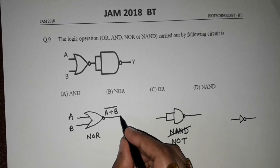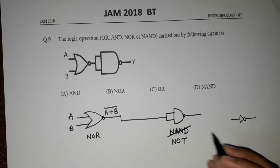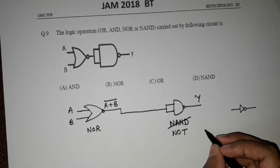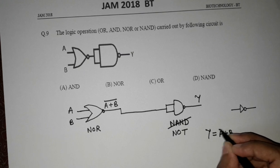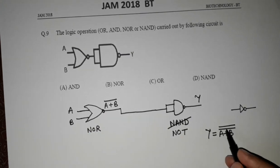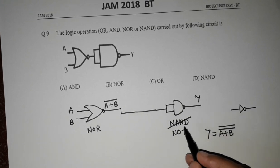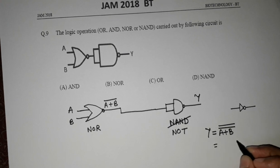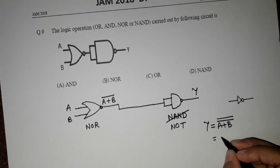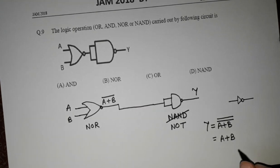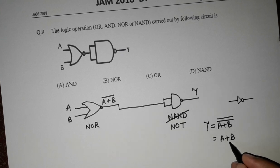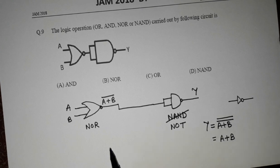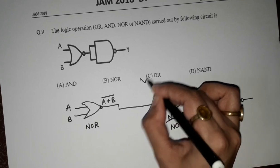If we feed A plus B whole bar at the input of this NOT gate, the output Y will be: Y equals A plus B whole bar, with a second bar for the NOT gate. These two bars cancel out and we get A plus B. A plus B indicates this circuit is an OR gate — the correct answer is option C, OR gate.